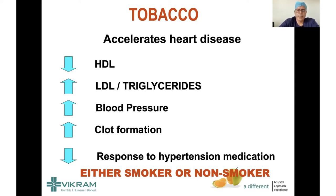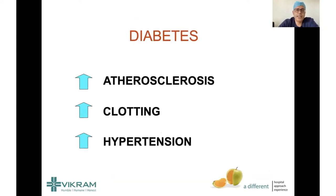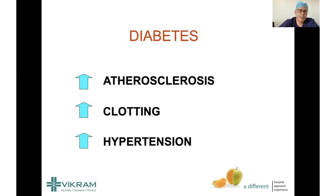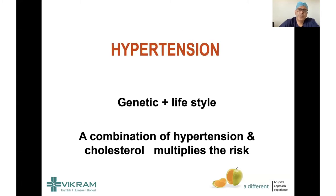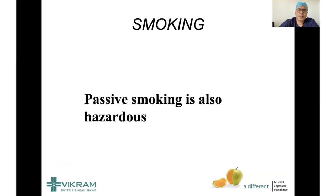Diabetes is harmful in the sense that it damages the whole body from top to bottom — brain, eyes, heart, kidneys, and leg supply. It causes increased cholesterol deposition in blood vessel linings even if your cholesterol is not very high, because it makes the cholesterol very sticky. It also increases clotting in the body and the vascular supply, and causes increased hypertension by affecting the kidneys. So it affects cholesterol, blood supply, blood pressure, and clotting.